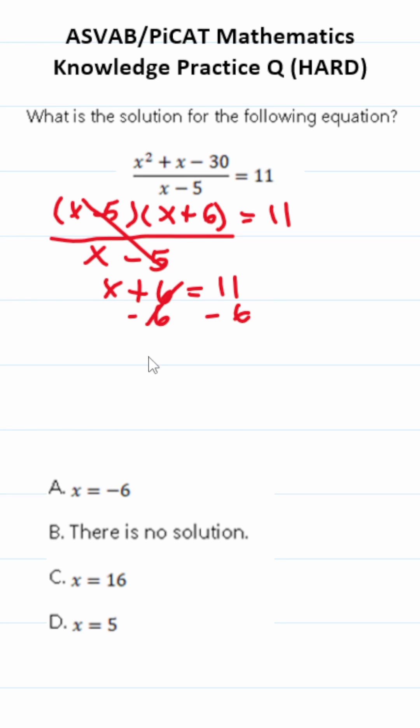Subtract 6 from both sides and this becomes x equals 5. Now let's plug in 5 to these x values to make sure that this makes a true statement.